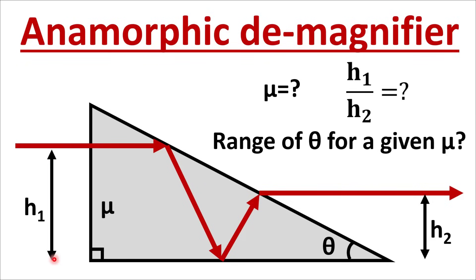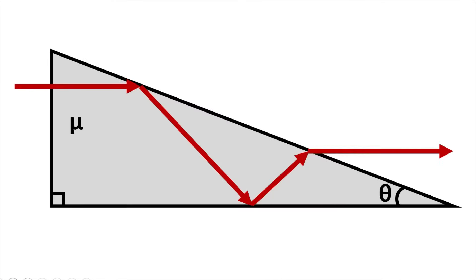That's why it is called a demagnifier. What we have to find: first, what is the refractive index of this prism for this to happen; second, what is the demagnification ratio h1 by h2; and third, if mu is fixed, what is the angle theta of the prism for this to happen. Let's see the geometry of the problem and make some normals.